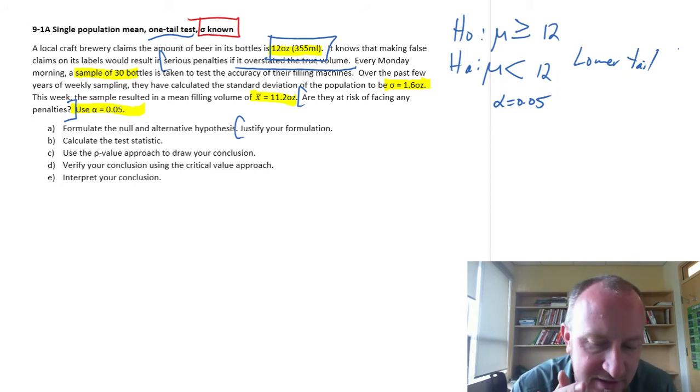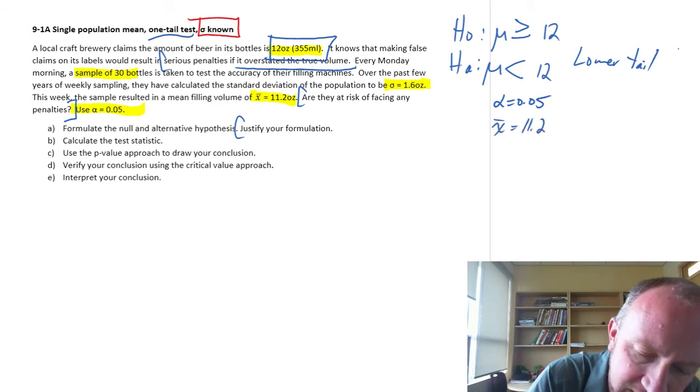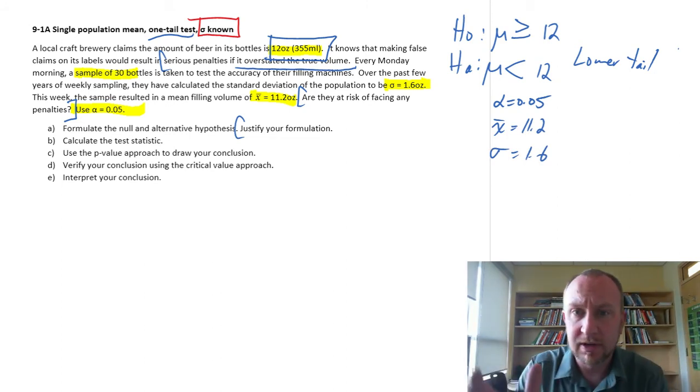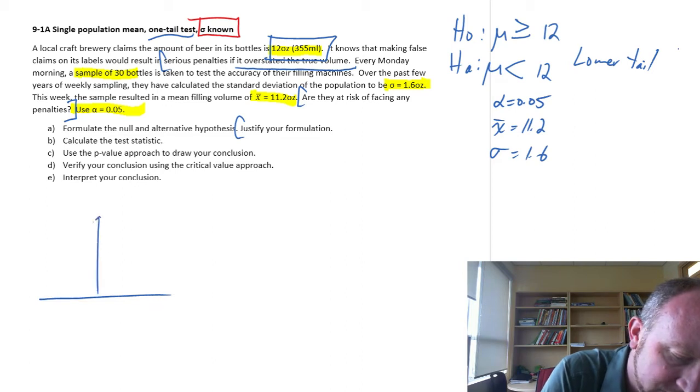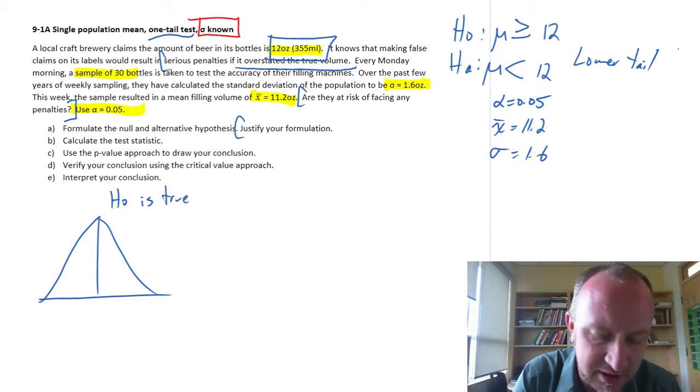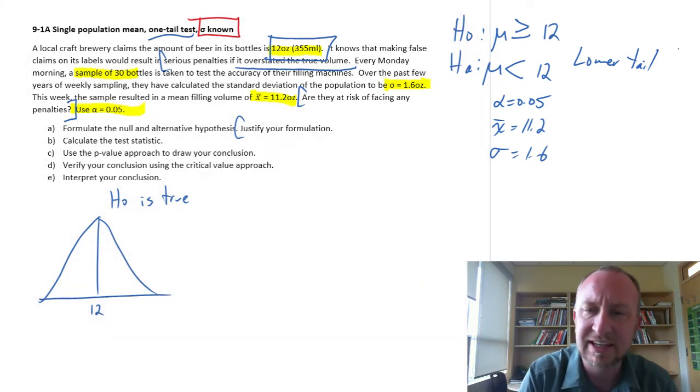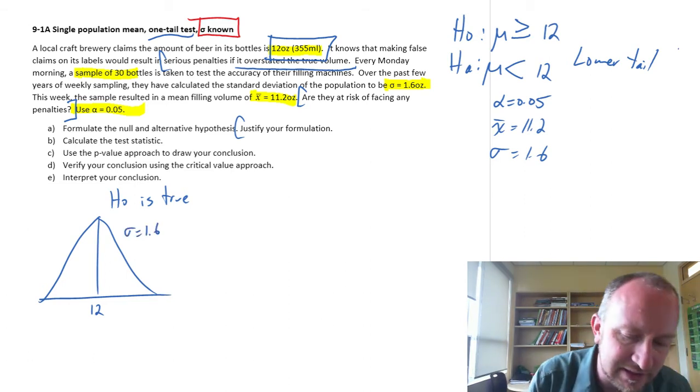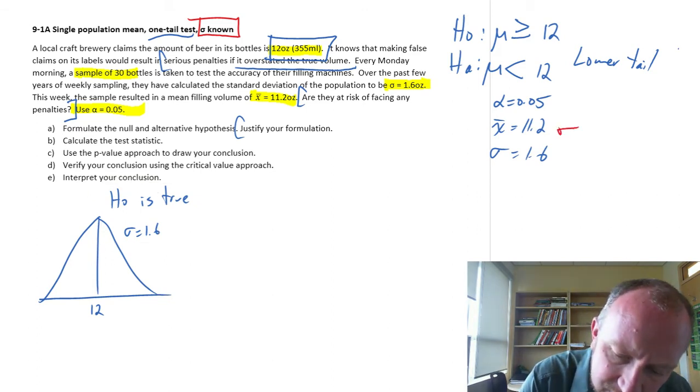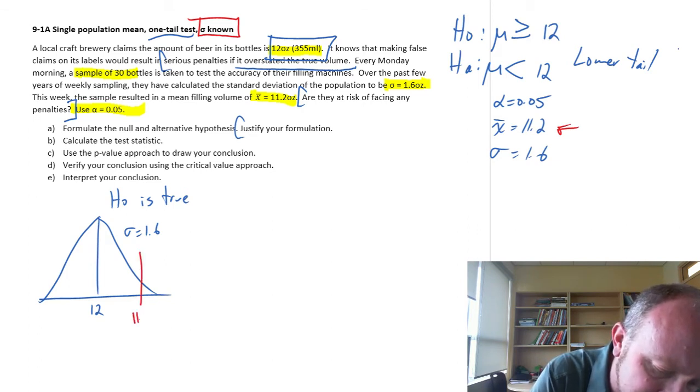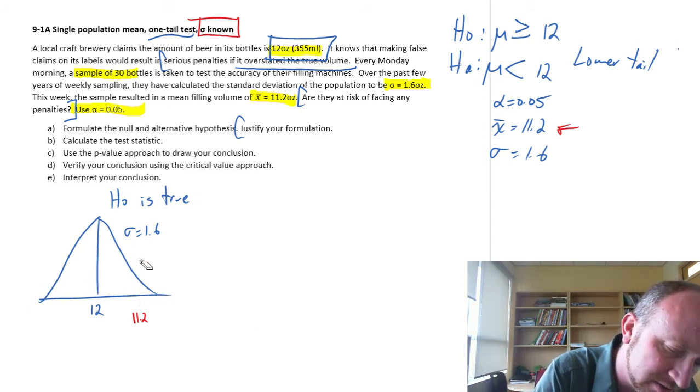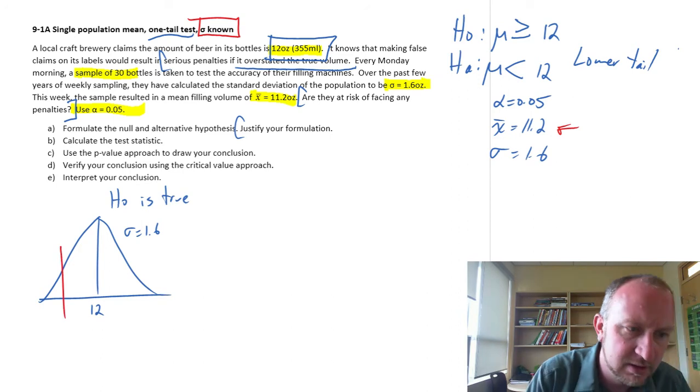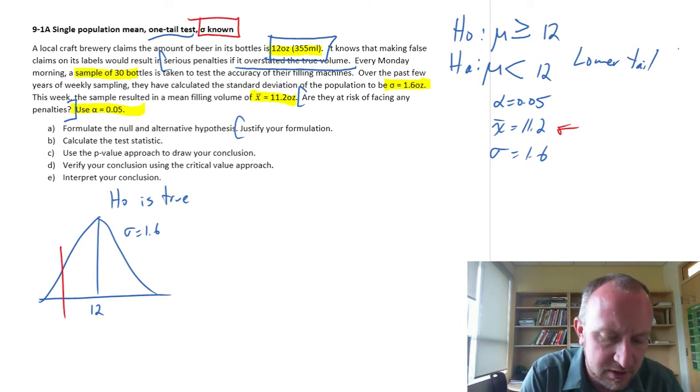Next step: calculate the test statistic. Here's my distribution if the null is true. We always perform these tests under the assumption that the null hypothesis is true, with a mean volume of 12 ounces. From this distribution that has a mean of 12 and a standard deviation of 1.6, we took a sample with the mean of 11.2.